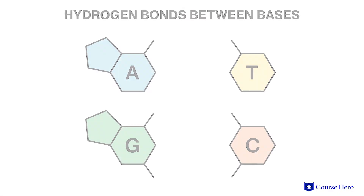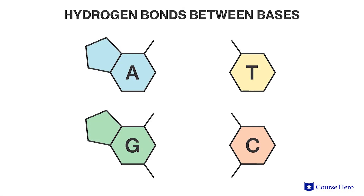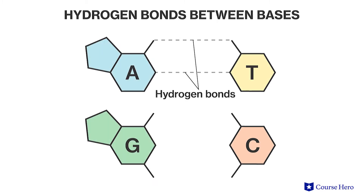Watson and Crick built on this understanding to determine the structure of DNA. They reasoned that due to the fact that it was a helix and had to have a uniform diameter throughout, the width of each base pair had to be the same. With the four given bases, that could only be achieved if a purine and a pyrimidine were paired up. An additional level of specificity was the number of hydrogen bonds formed between the base pairs: A and T can each form two hydrogen bonds, whereas C and G can each form three.